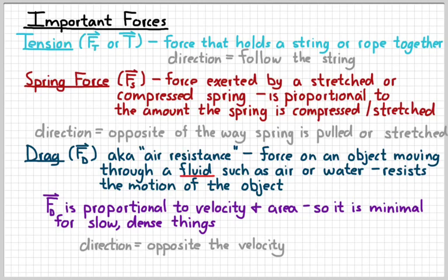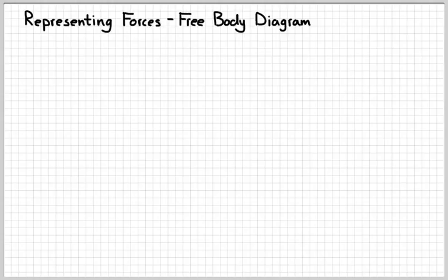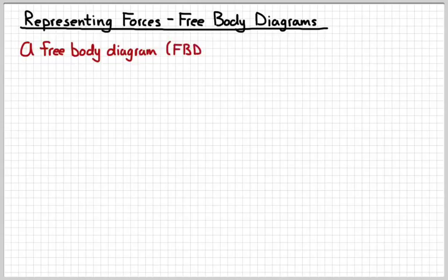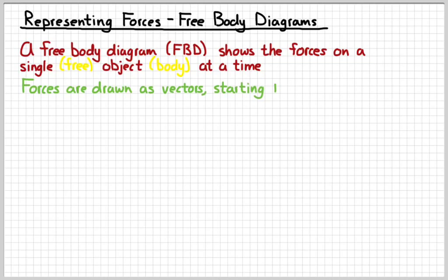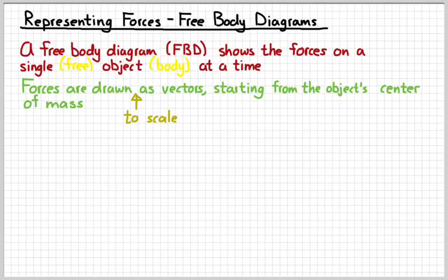So we know some specific forces and we'll learn more over the next few months. The way that we represent forces graphically is in a diagram called a free body diagram. A free body diagram, or FBD for short, represents the forces on a single body — one object at a time. Forces are drawn as vectors starting from the object's center of mass, and typically we draw the object as a simple shape like a rectangle, square, or dot. Remember, when you draw vectors, you need to draw them to scale.